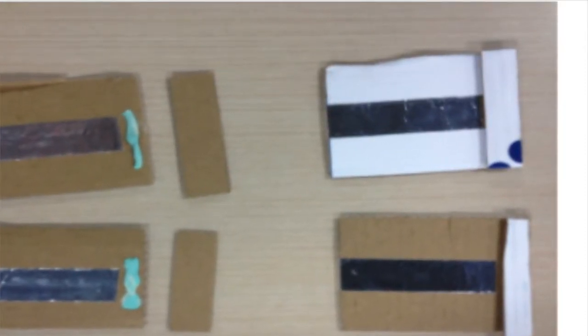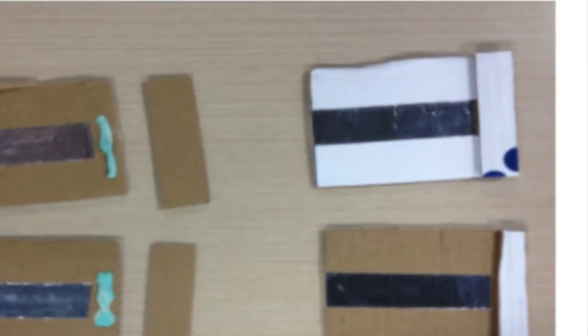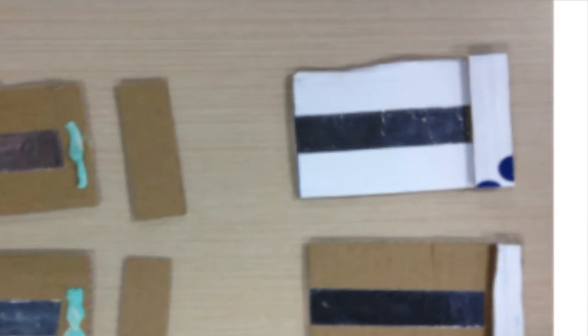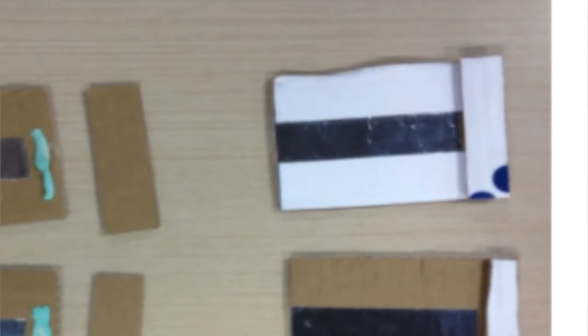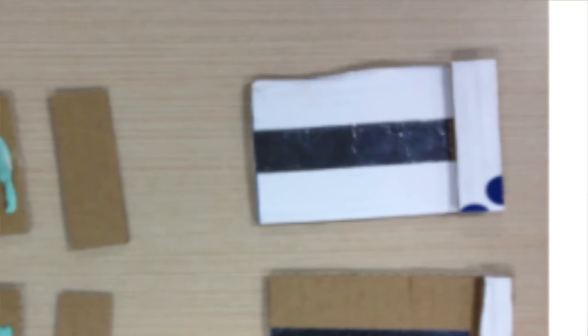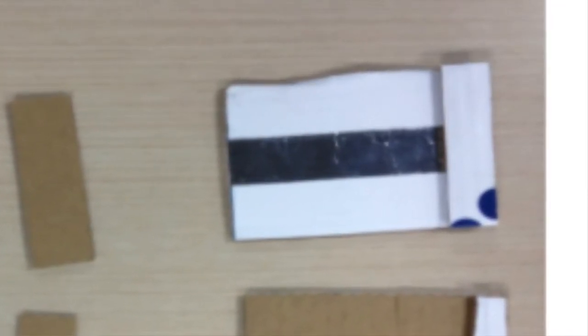You should also glue a smaller section of cardboard onto the back of each of your cardboard squares. This is important because without this, the alarm will constantly sound.